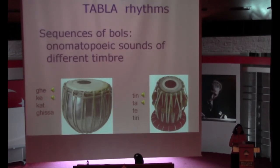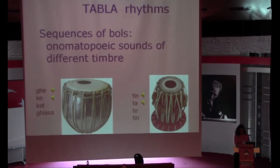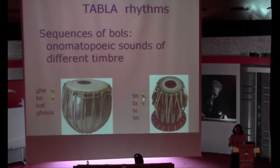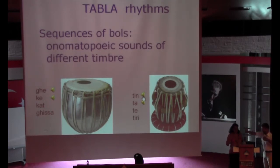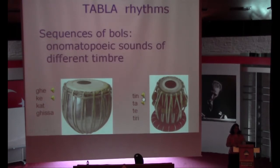The sounds we produce on the tabla we call bols — onomatopoeic words where the word itself defines what it sounds like. There are words like tin, ta, te, ghe, ka — some are resonant sounds, some are damped sounds. There are bols played on the right-hand drum, bols played on the left-hand drum, and bols played together. I'm calling these simple bols and compound bols — simple for being on one drum, compound if they're on both drums.